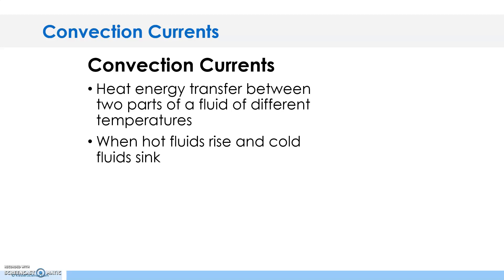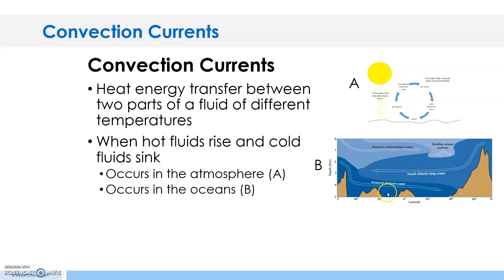Convection currents are the heat energy transfer between two parts of a fluid of different temperatures. When hot fluid rises and cold fluid sinks, this occurs in the atmosphere as in the diagram you see here. Hot rises, cool sinks. This also occurs in oceans.